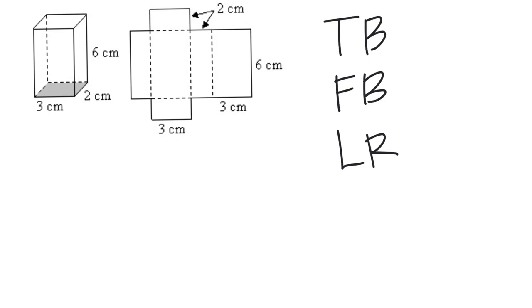When we looked at this last week, we just looked at these three numbers that were listed and used the top, bottom, front, back, left, right. So today the difference is we are going to do the same thing, we're just going to look at the net instead of the three-dimensional object.